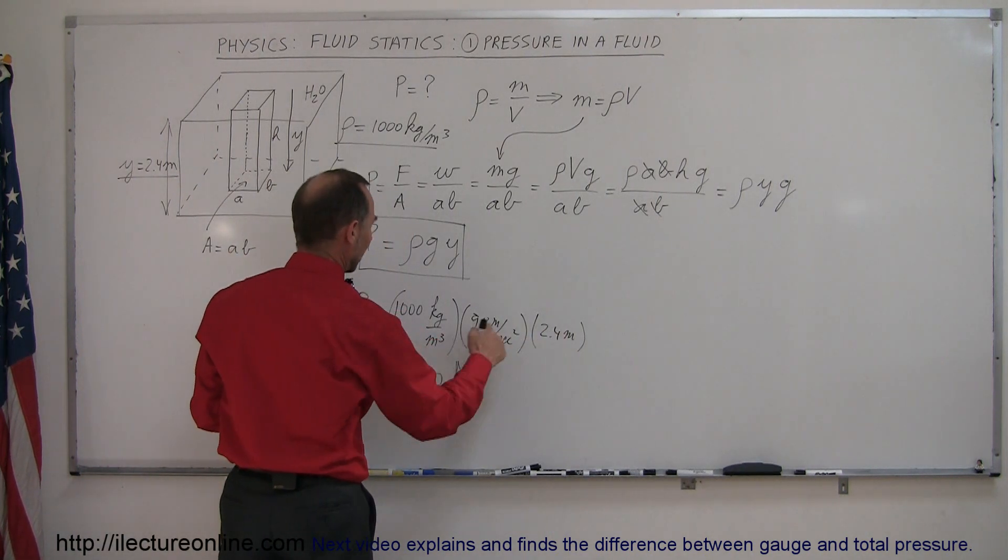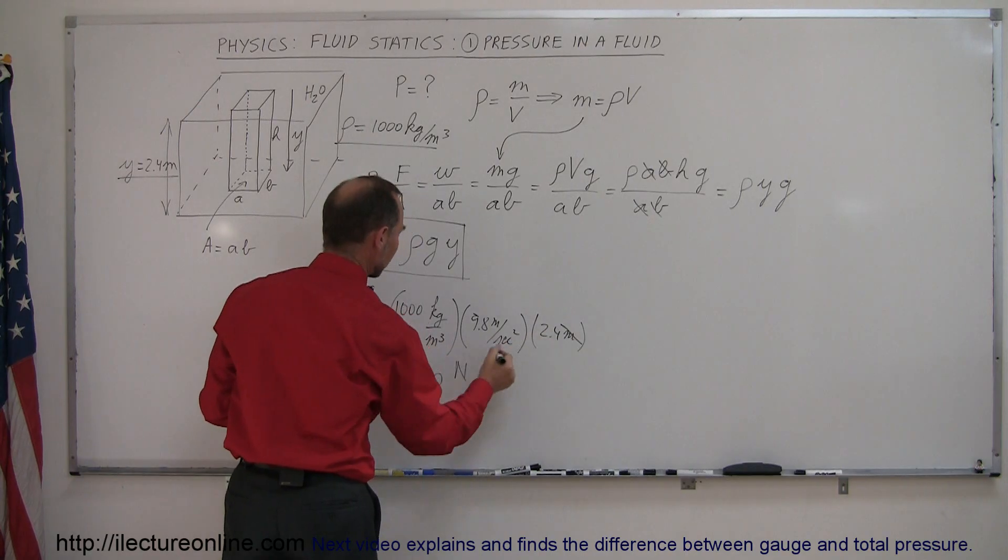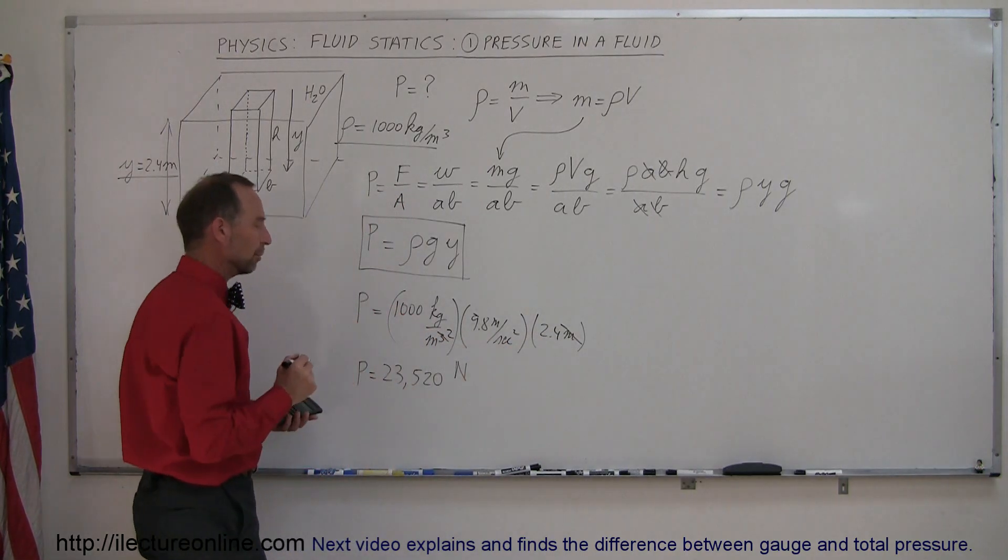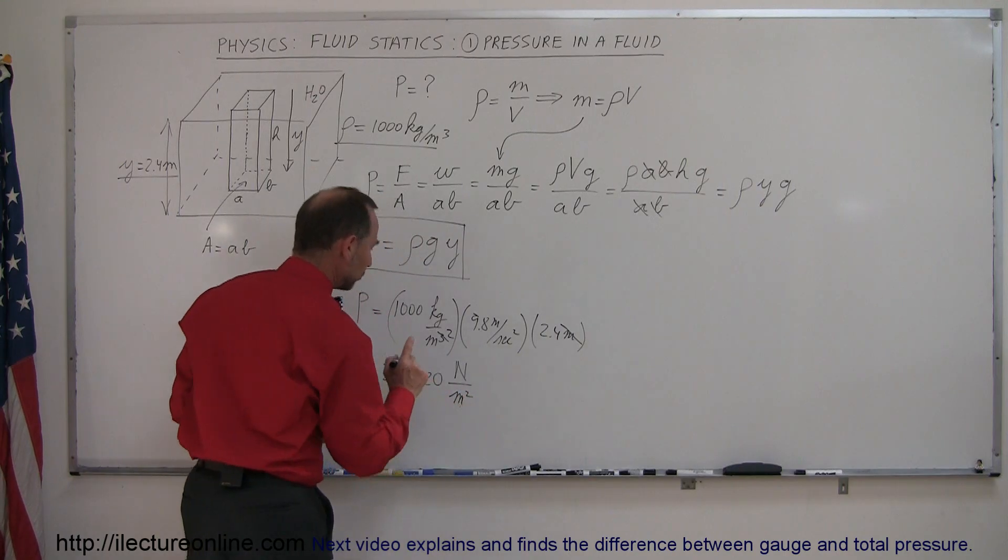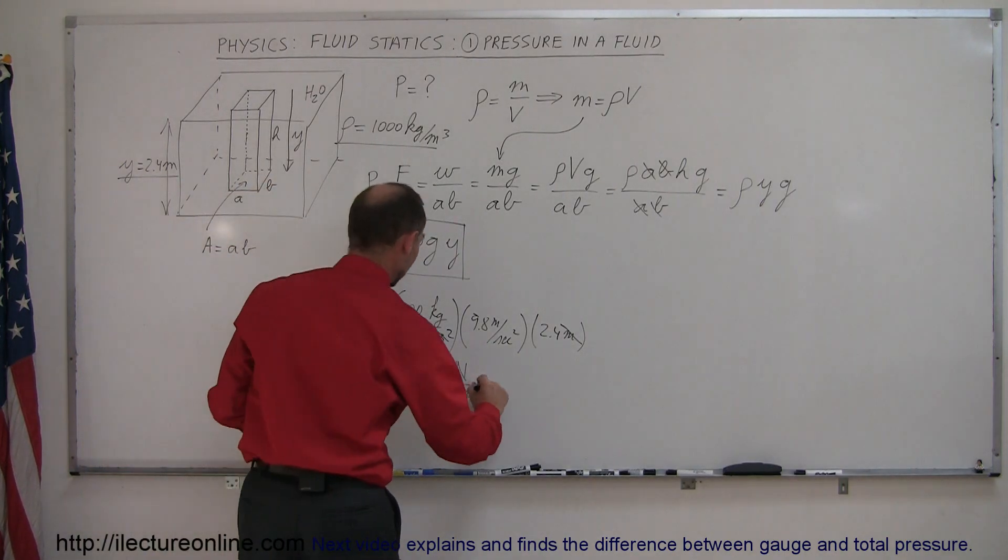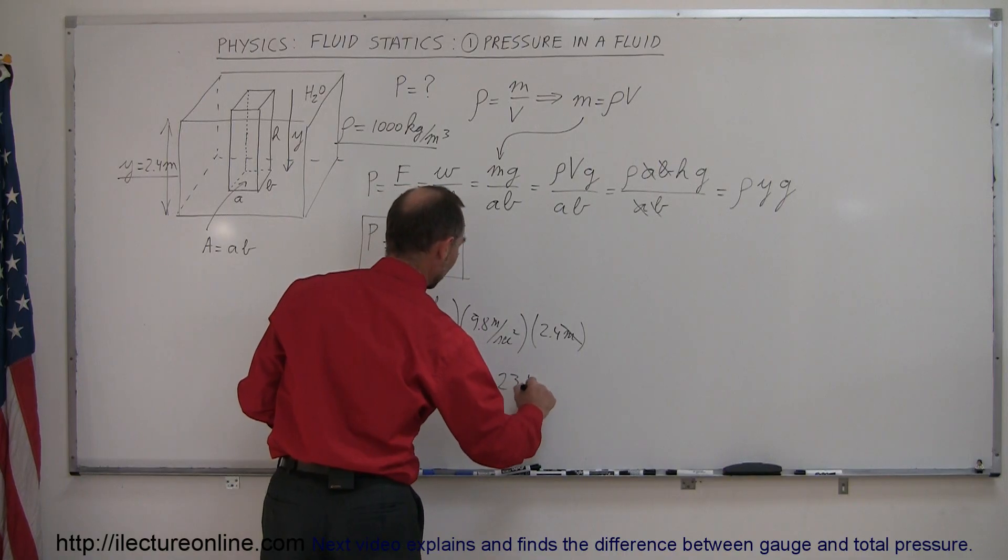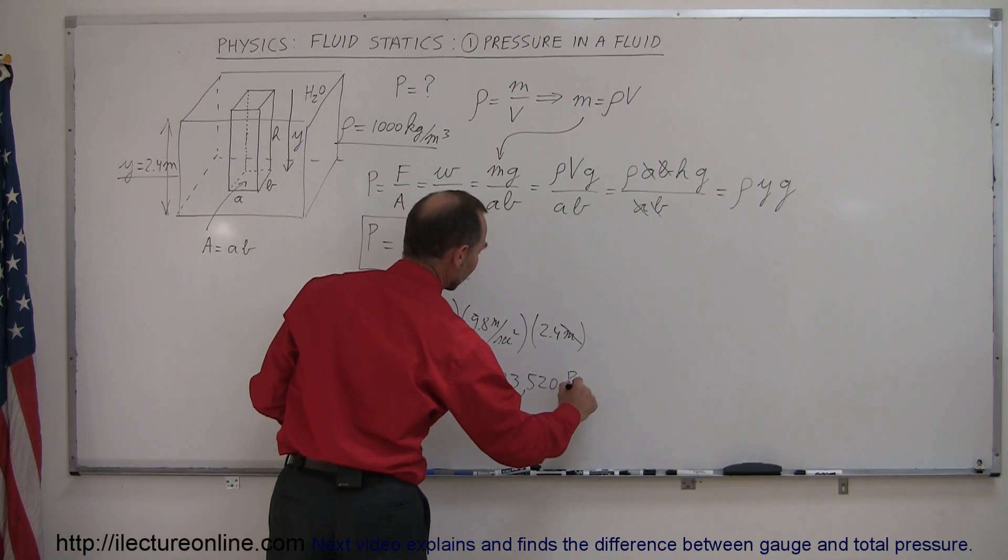And then we still have meters, and the meters cubed here, so this meters, cancel out one of those. Now we have per meter squared. So the units then become newtons per meter squared, and we have a new unit for that. That is equal to 23,520 pascals.